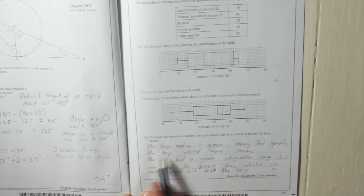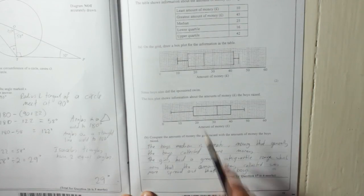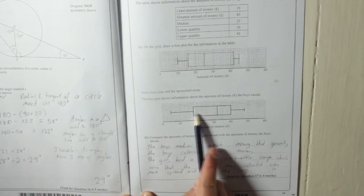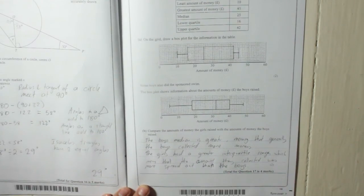So, the boys' median is greater, meaning that generally the boys collected more money. The girls' had a greater interquartile range. I know that because this bit is bigger than this part. Meaning that the amount of money they collected was more spread out than the boys'. And that should get you two marks.